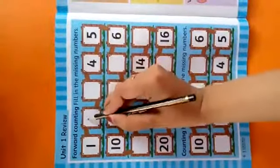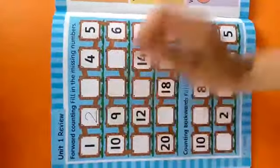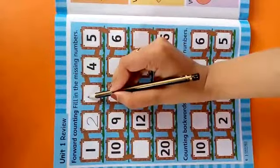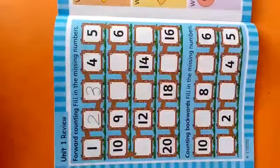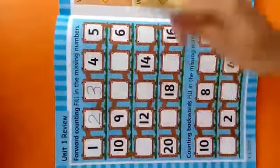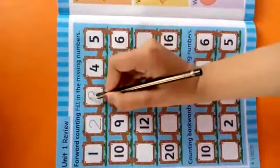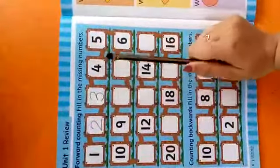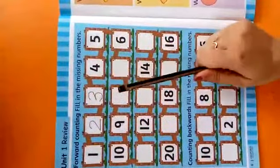One and after one we have two. Then we have three. One, two, three, four, five, six.